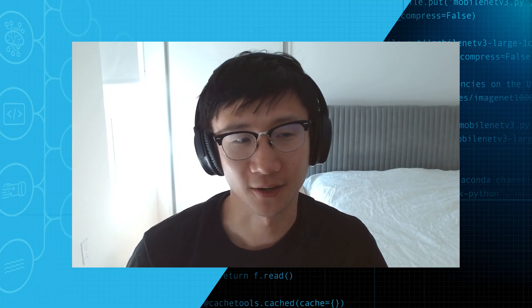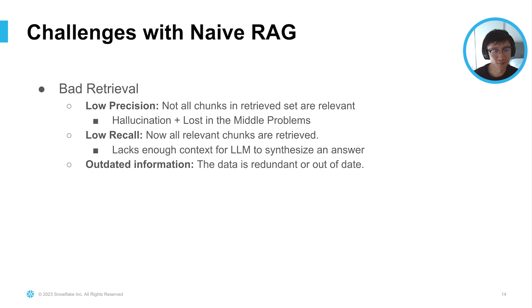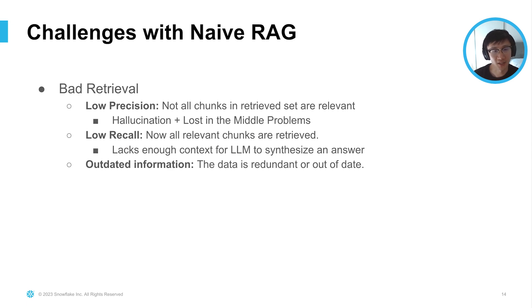Now we can talk about some challenges with this naive RAG stack. There are challenges users typically face when they set up a basic RAG stack like this, and there are just a lot of different edge cases you start running into. Symptoms include bad retrieval — low precision, where not all the chunks in the retrieved set are actually relevant to the question. You might have a lot of fluff in the retrieved context, which can lead to hallucination and lost-in-the-middle problems. You can also have low recall, where not all relevant chunks are retrieved, lacking enough context for the LLM to synthesize a proper answer.